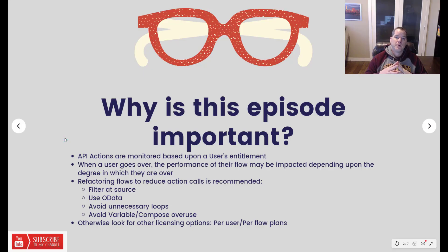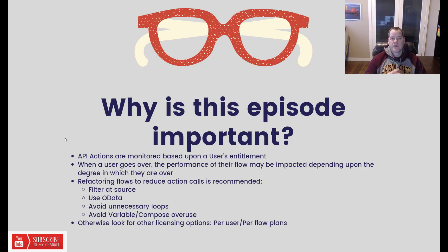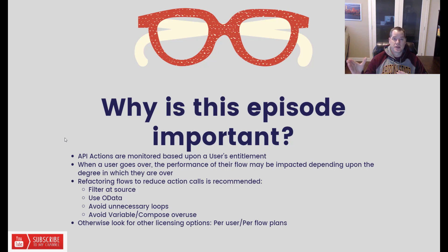Let's talk about why this content is important. API actions are monitored based upon a user's entitlement. An API action is essentially any action that exists on our canvas itself — it could be calling a connector like send an email, setting variables, or converting HTML to text. All of those contribute to an end user's entitlement.